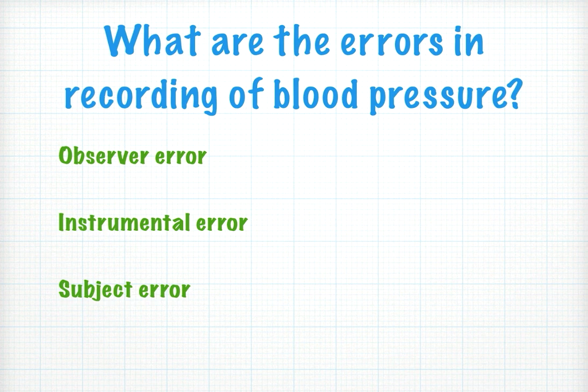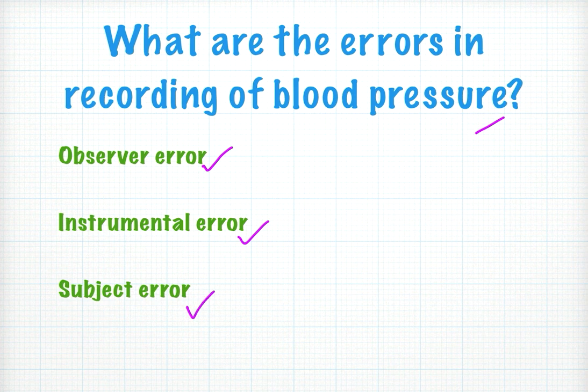The next question is: what are the errors in recording of blood pressure? There are three types of errors. Number one is observer error, which is due to the error made by the person performing the BP recording. Second is instrument error, from the BP apparatus or stethoscope. Third is subject error, due to biological changes in the subject.